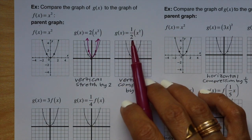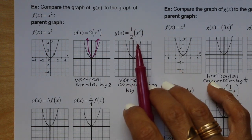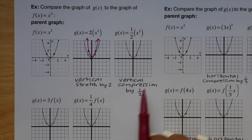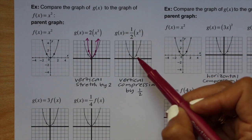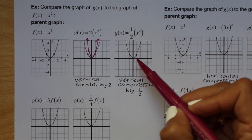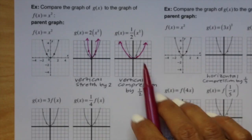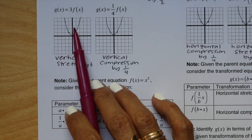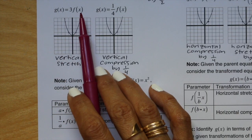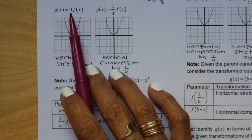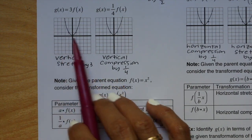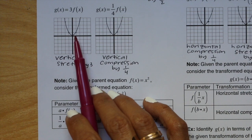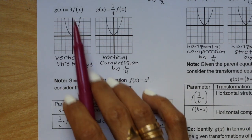This next one says g of x equals 1 half x squared. There's a number being multiplied in front, so that's a vertical stretch or compression. Because it's a fraction, it's a vertical compression by a factor of 1 half. Instead of going up 1 on each side, we only go up 1 half. For the next example, g of x equals 3 times f of x — a vertical stretch by 3. Instead of going up 1, we go up 3. Make sure when you count up 3, you're starting on the x-axis.